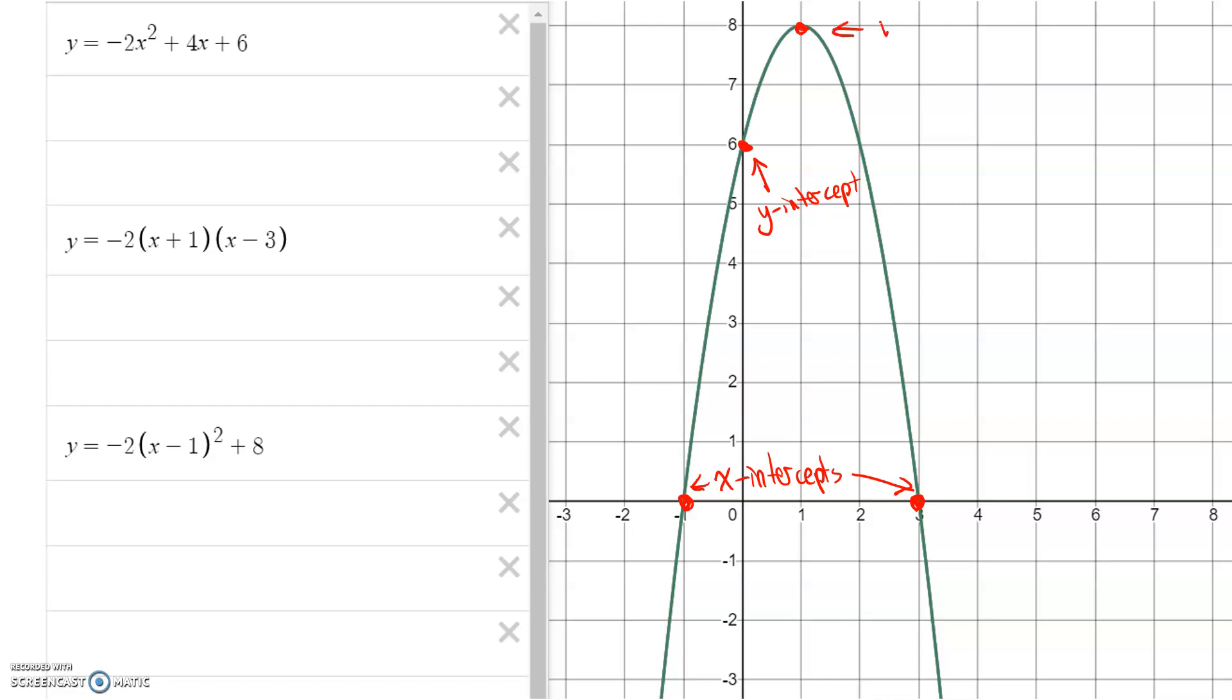And then we have this point up here, which is called the vertex. I'm just going to label the vertex, it's 1, 8. And so we have all those things, and then we have this idea that every parabola is the same on both sides. This is called the axis of symmetry. So because every parabola is the same on both sides, as soon as you have one point and you know where that axis of symmetry is, we can put another point on the other side like that.